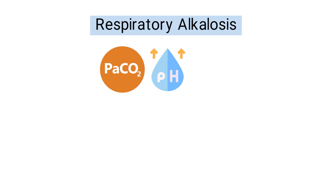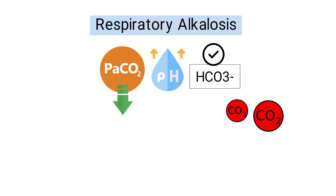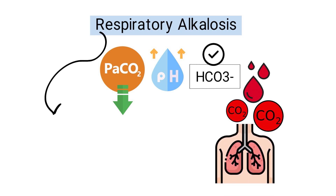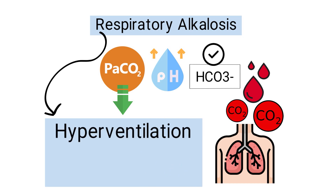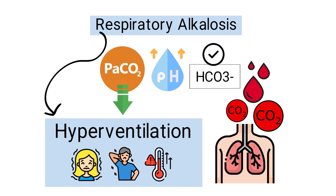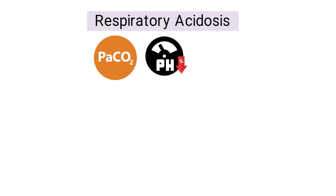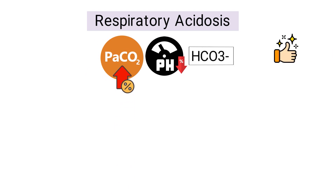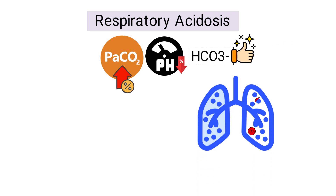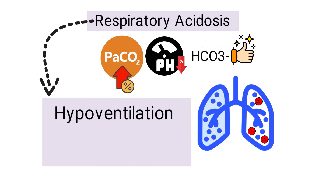Respiratory alkalosis is a condition where the blood pH is increased, PaCO2 is decreased, and bicarb is normal. This occurs when there is too much CO2 being removed from the blood by the lungs and is caused by hyperventilation due to factors such as anxiety, pain, or fever. Respiratory acidosis is a condition where the blood pH is decreased, PaCO2 is increased, and bicarb is normal, caused by hypoventilation due to factors such as lung disorders, obesity, and sleep apnea.